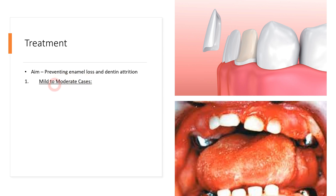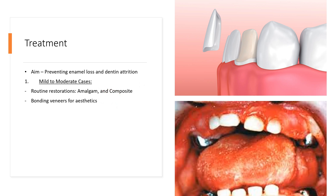In mild to moderate cases, routine amalgam or composite restorations can be performed to address attrition. Since there is discoloration throughout the oral cavity — which is an important aesthetic concern — we can go for veneers. A small amount of tooth structure is reduced and a veneer is placed over the tooth, masking the abnormal color and giving a natural, aesthetically pleasing appearance.